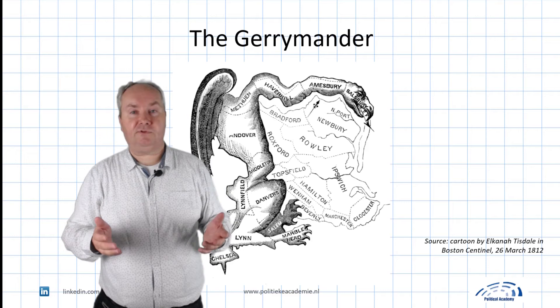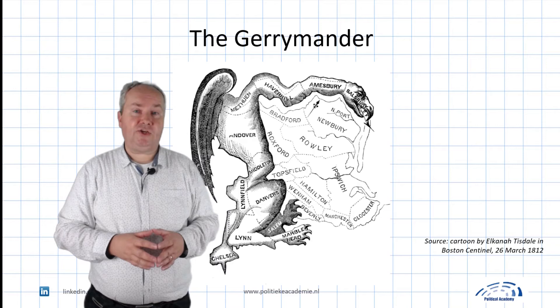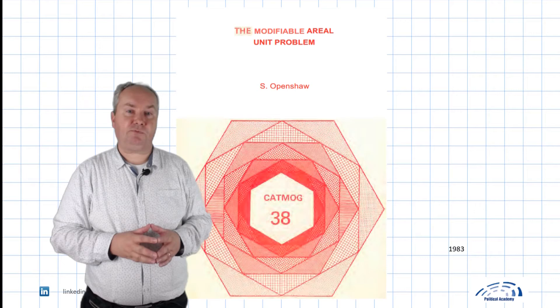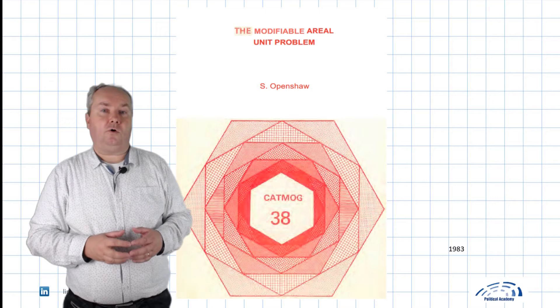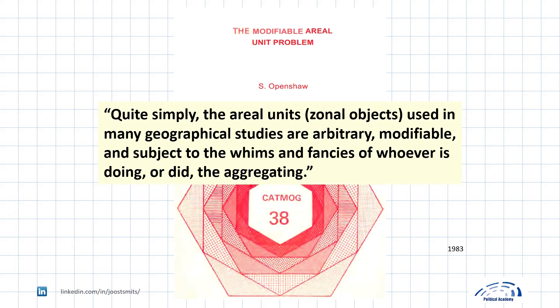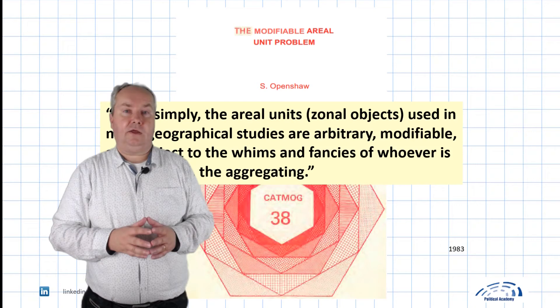In 1985, 173 years later, the Supreme Court declared gerrymandering unconstitutional. Nevertheless, the formation of districts remains an issue — not just for political reasons, but also statistical ones. This famous little book discusses all kinds of effects when large areas are split up into smaller areas and measurements are taken of what is going on inside them, or when areas are combined. It holds the quote: 'Quite simply, the aerial units — zonal objects — used in many geographical studies are arbitrary, modifiable, and subject to the whims and fancies of whoever is doing the aggregating.' Counting the votes of an election is like a simple geographical statistical study. There is an example that the correlation between the yield of wheat and potatoes varies with how areas are divided.